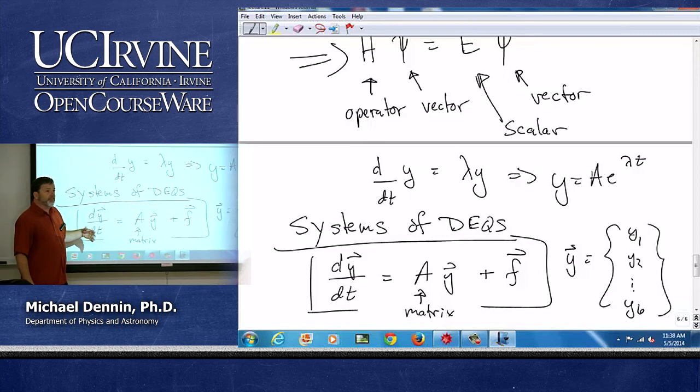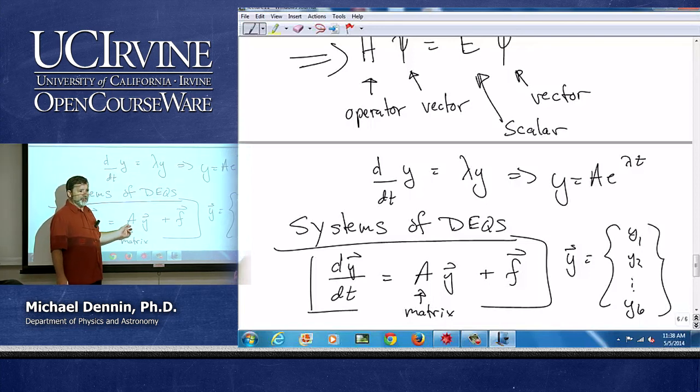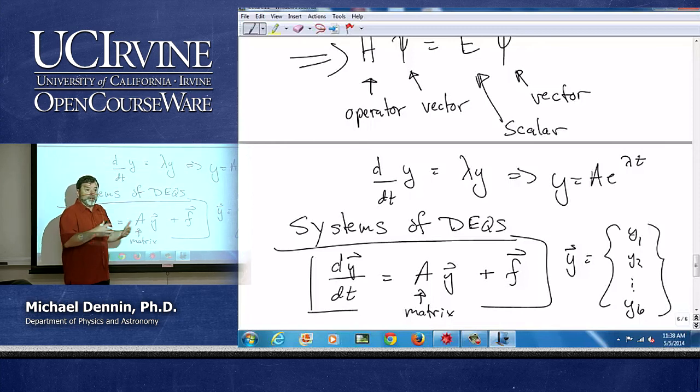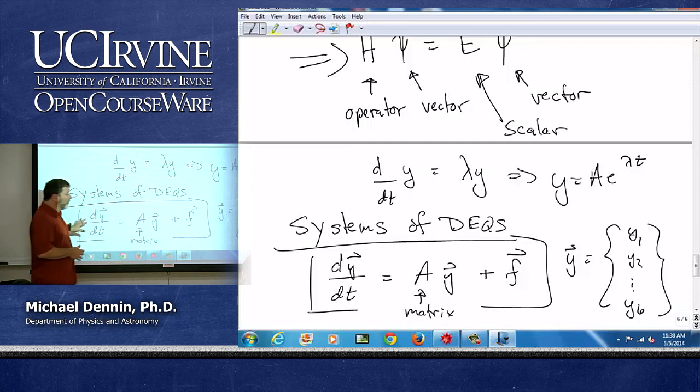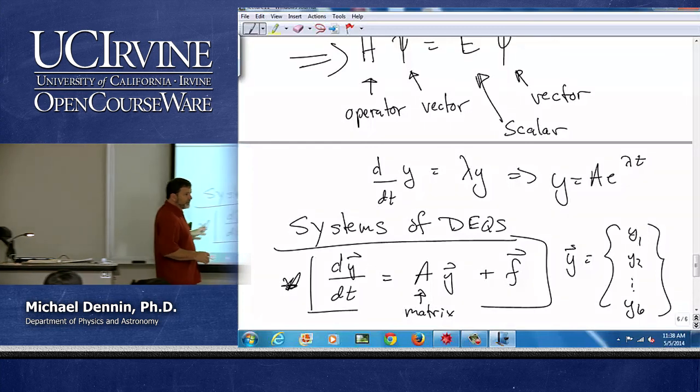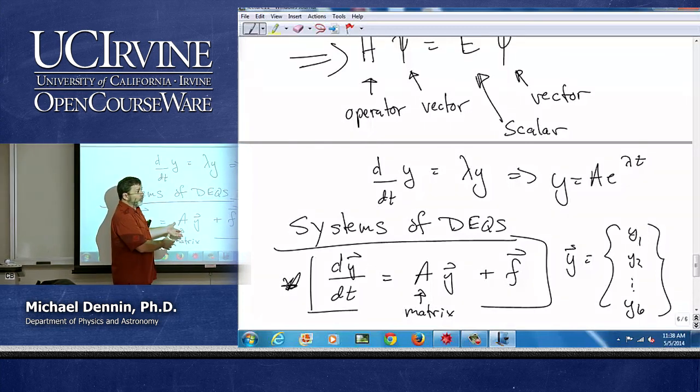And once I have it in this form, I can then do things like change my basis to a form where the matrix is diagonal, and then my equations are no longer coupled, they're new coordinates, and I found what we call the normal modes, which are the modes that are the natural ones for the system, where the system decouples. And so this is a huge idea in physics, is taking a system of differential equations, finding a change of basis, and getting the normal modes.